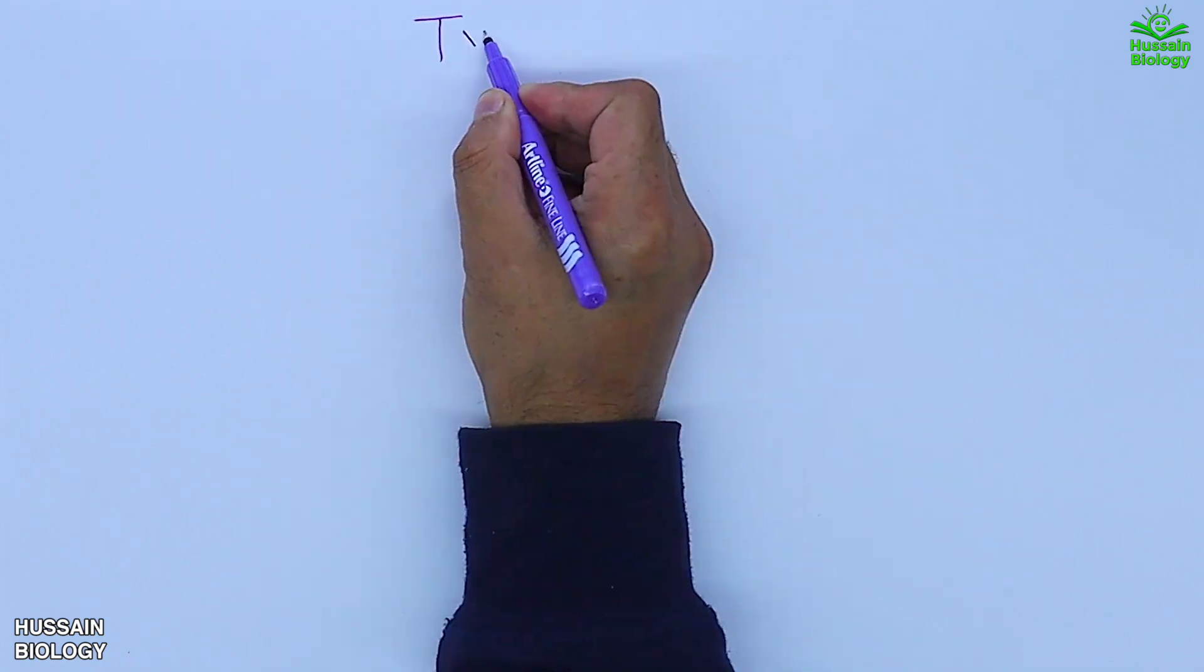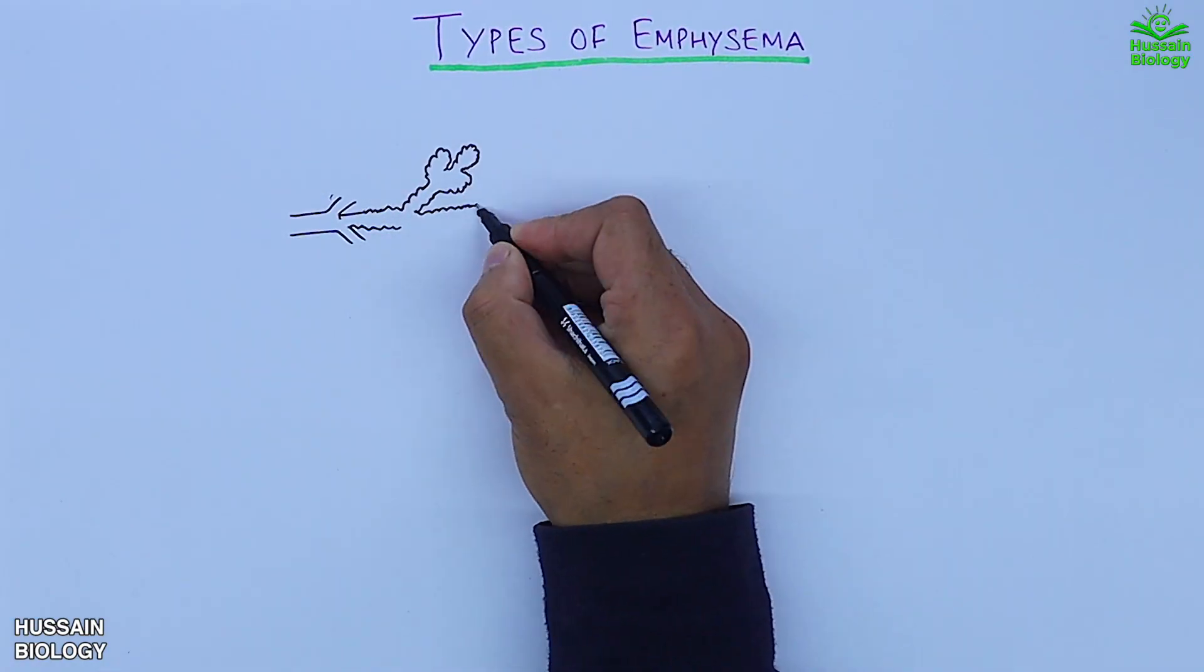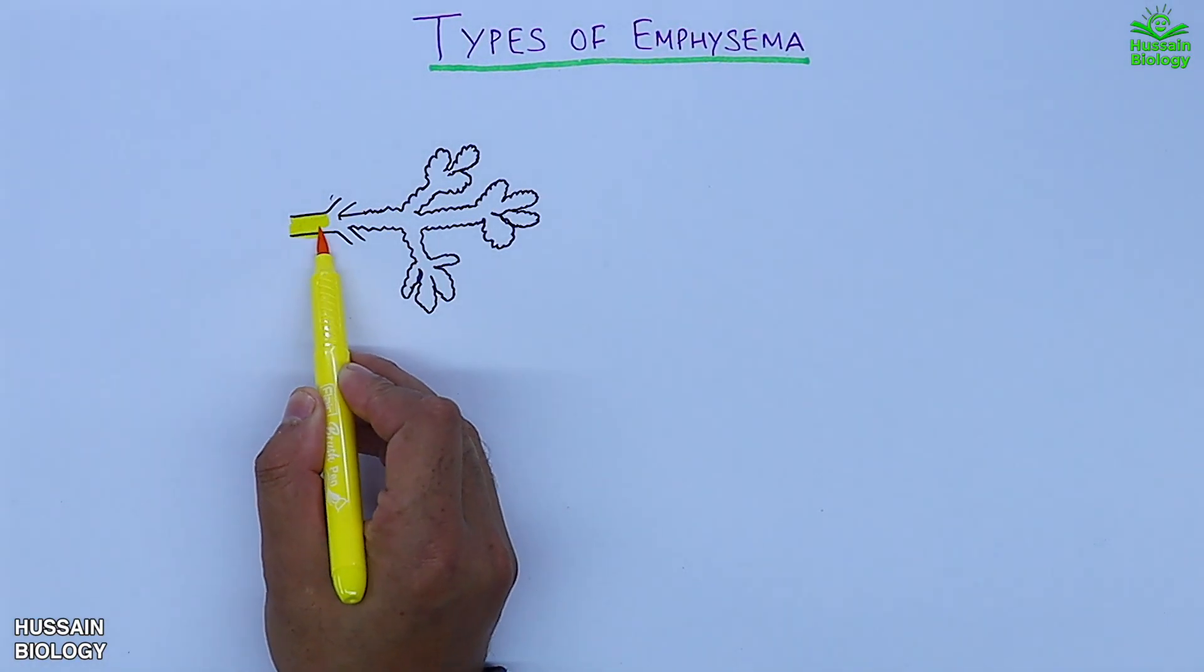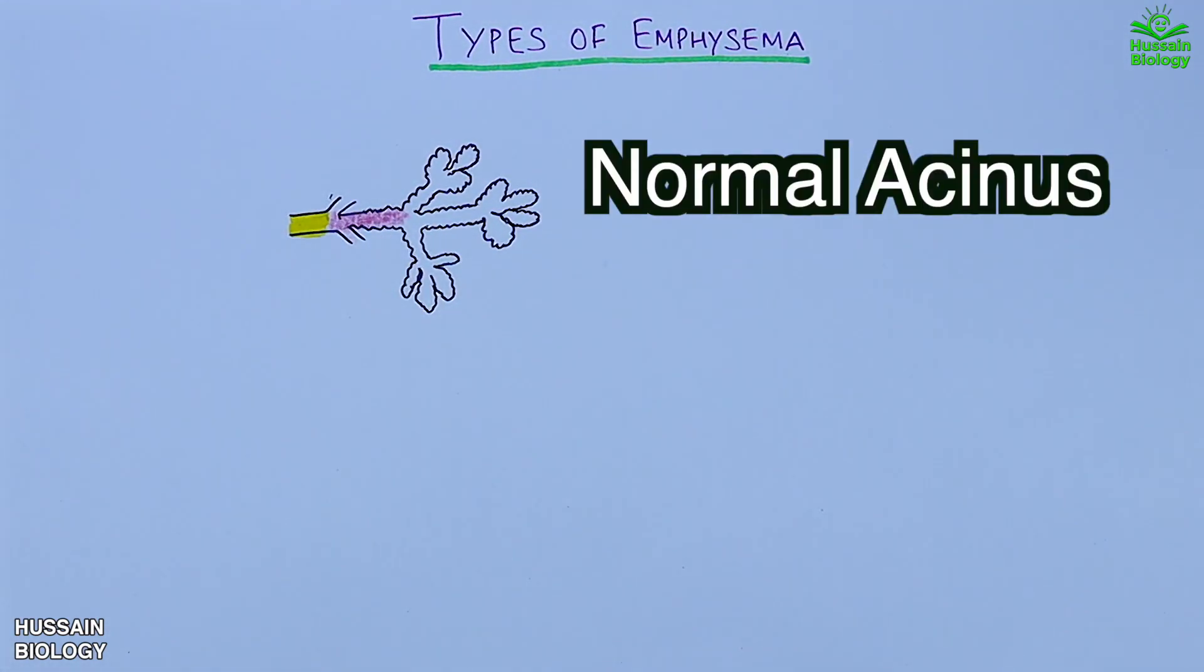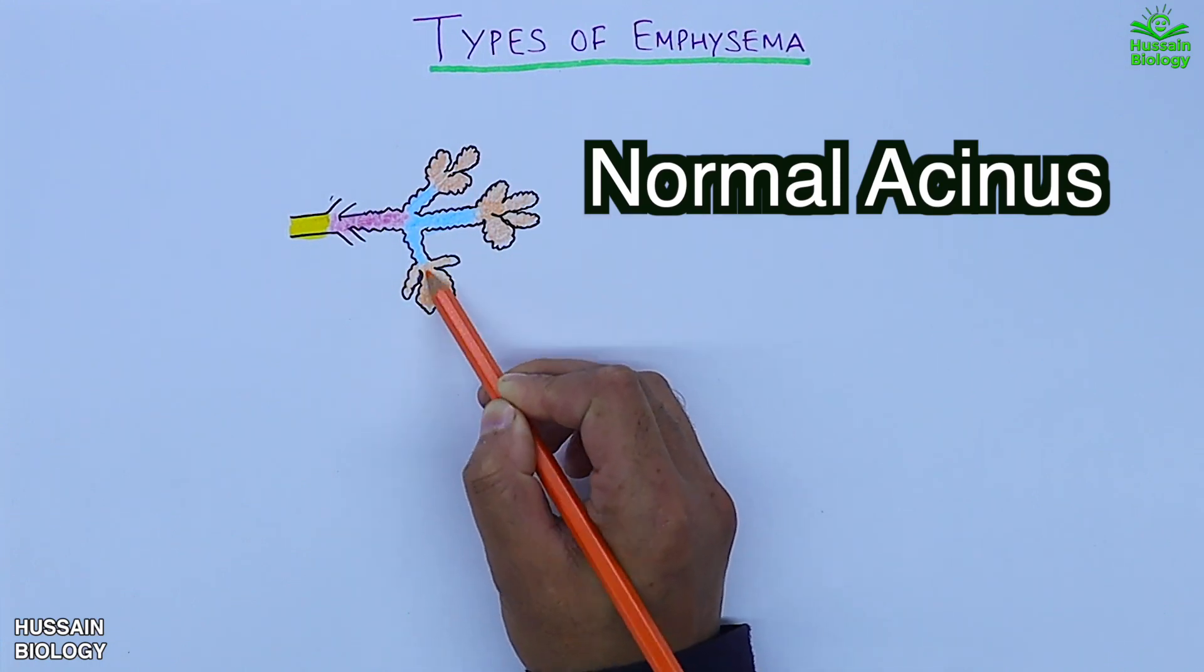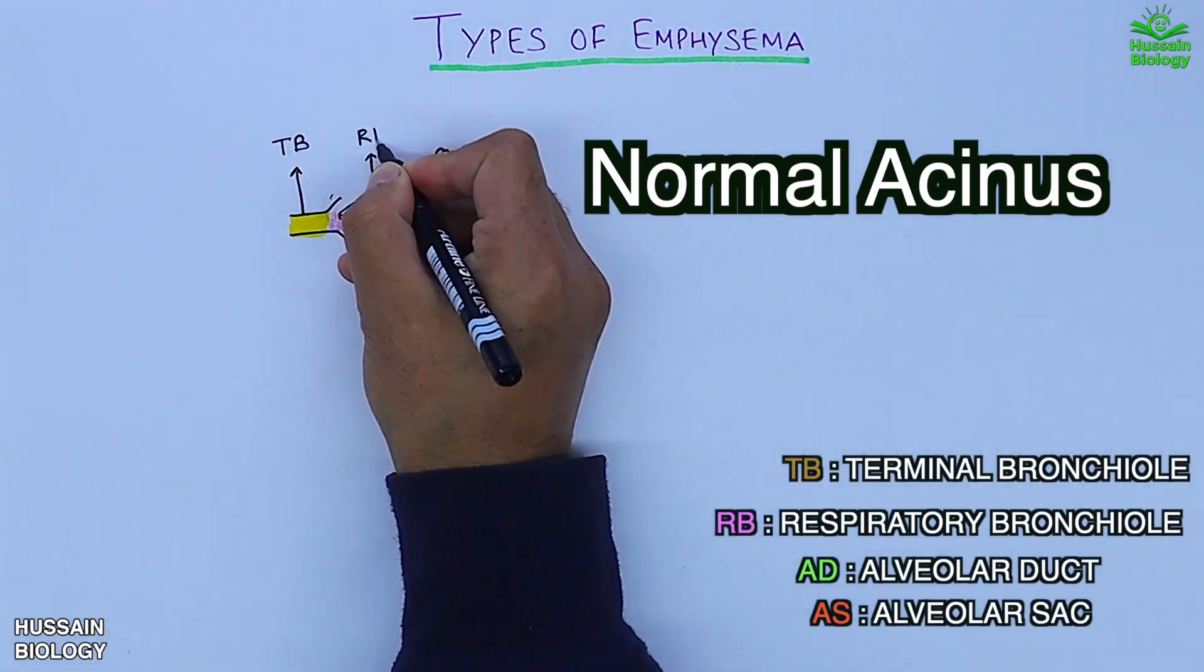Now let's see the types of amphysema. Here we see the normal acinus with normal air sacs showing terminal bronchiole in yellow, respiratory bronchiole in pink, alveolar duct in blue, and alveolar sac in orange.